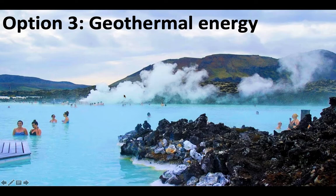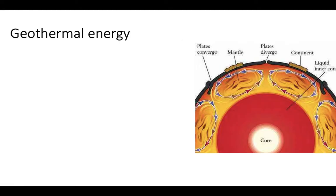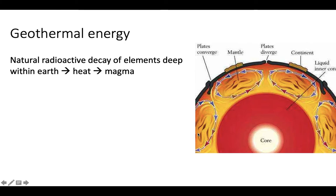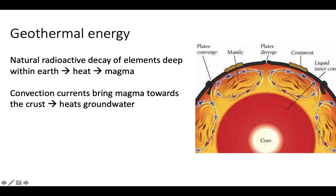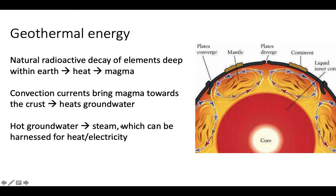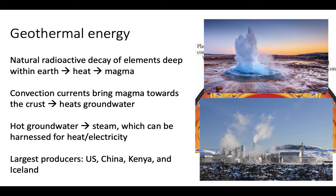The last option in this video is geothermal energy. Geo means earth, therm means heat — so geothermal energy capitalizes on energy from the earth's core. There is radioactive decay of various elements in the earth's core; as they release radiation, that produces a lot of heat and creates magma. Due to convection, as magma heats up it rises, heating groundwater in the crust. That groundwater, as it gets hotter, turns to steam, which we can harvest for heat or electricity generation.